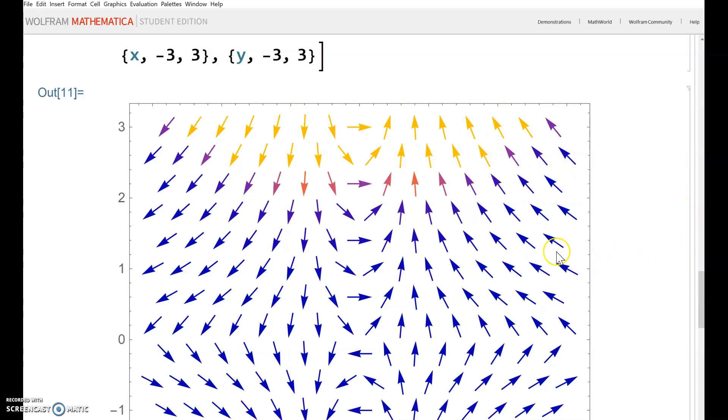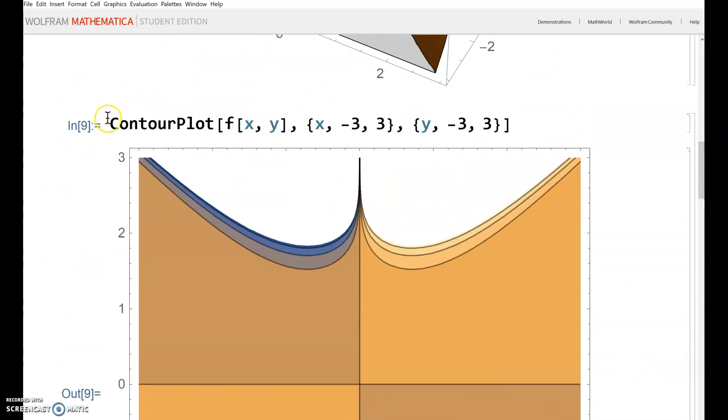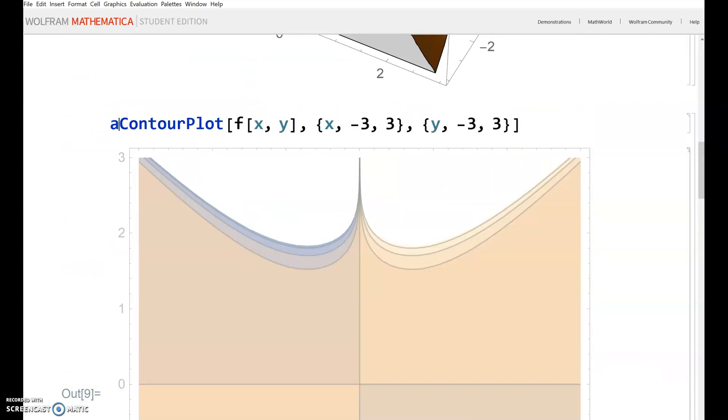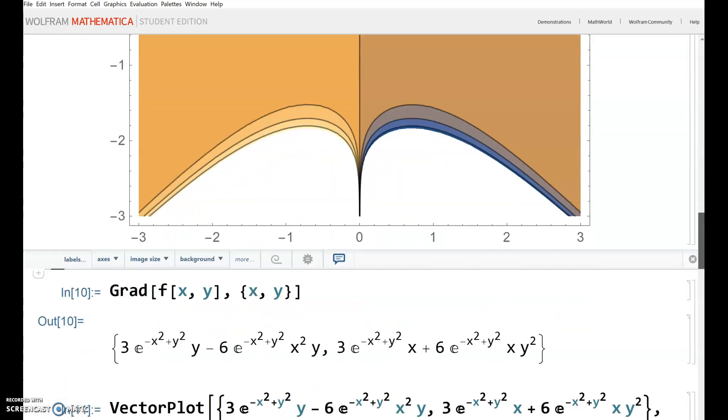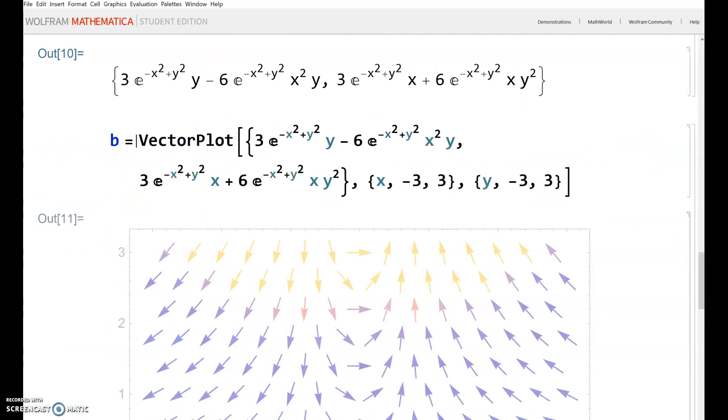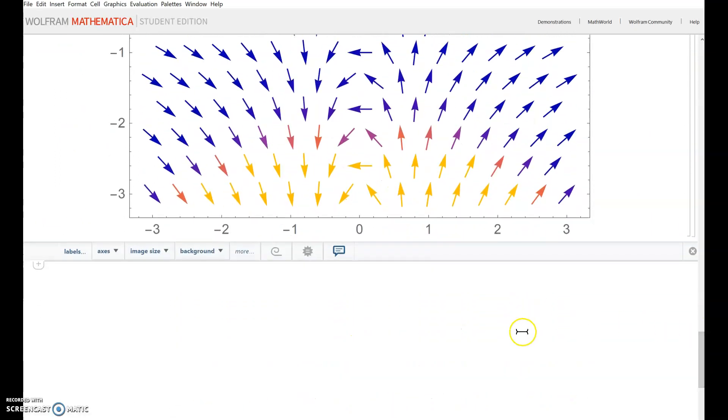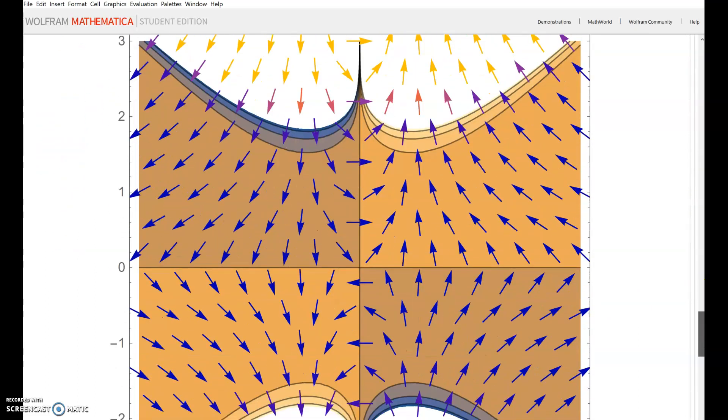You can overlay the gradient field on the contour plot using the Show command. Let's call the contour plot A and the vector plot B, then use Show[A, B]. This displays the gradient vector field on top of the contour plot.